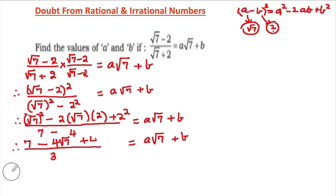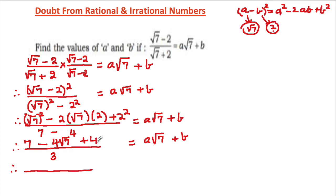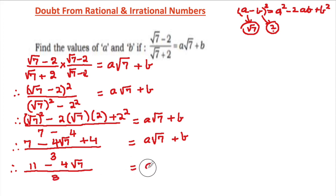Continuing with the numerator: 7 plus 4 gives us 11, so we have 11 minus 4√7 upon 3, and that is equal to a√7 plus b.